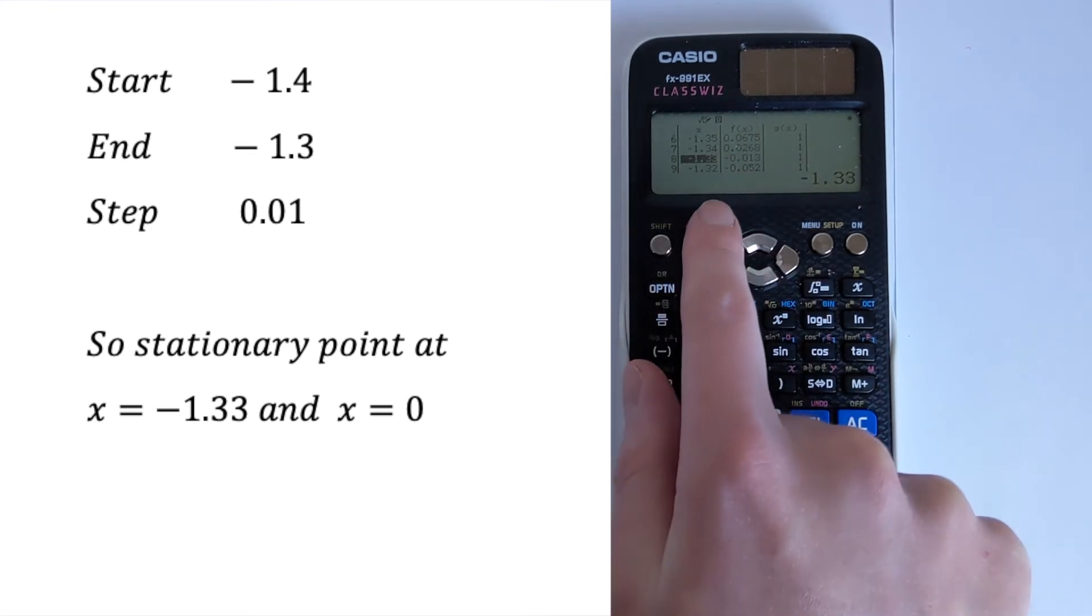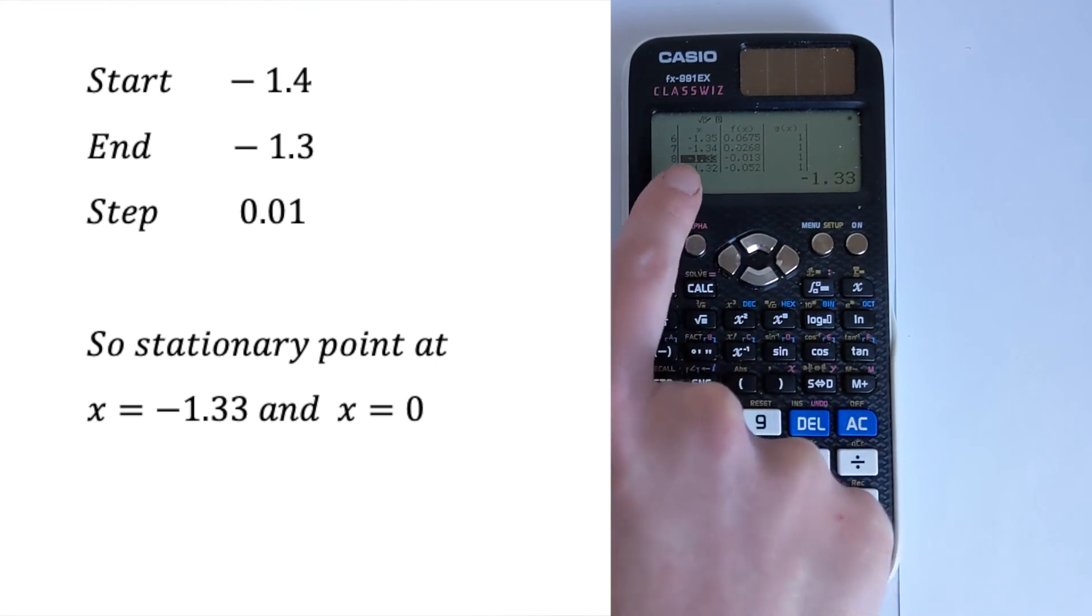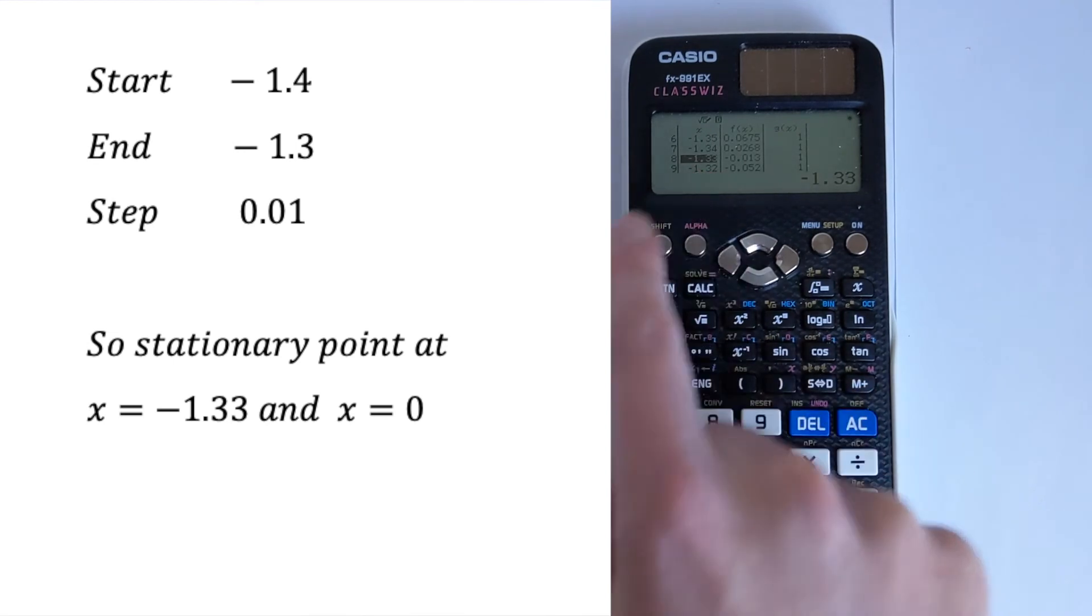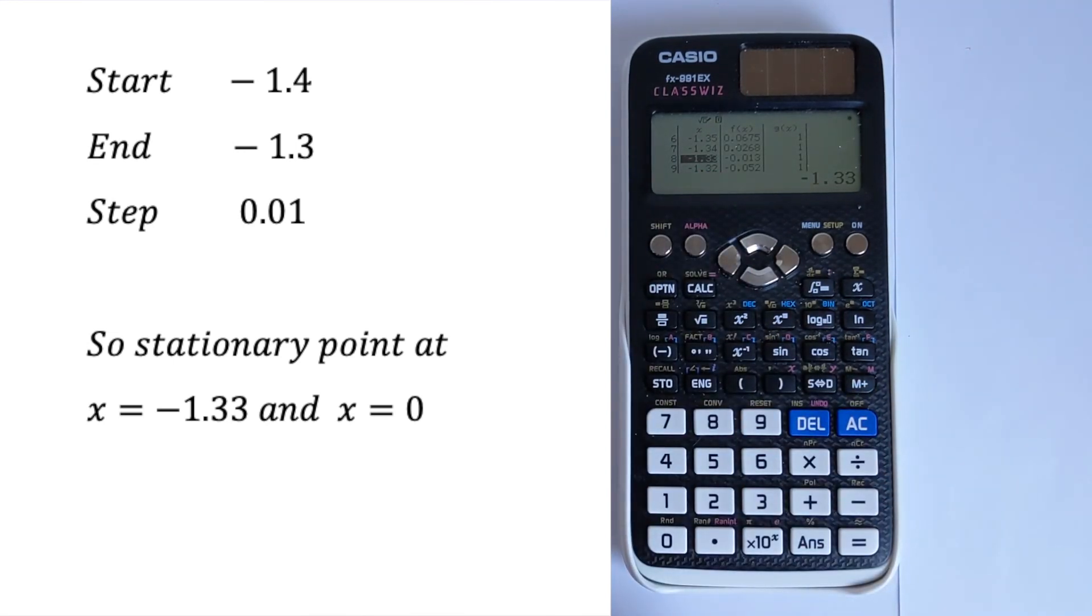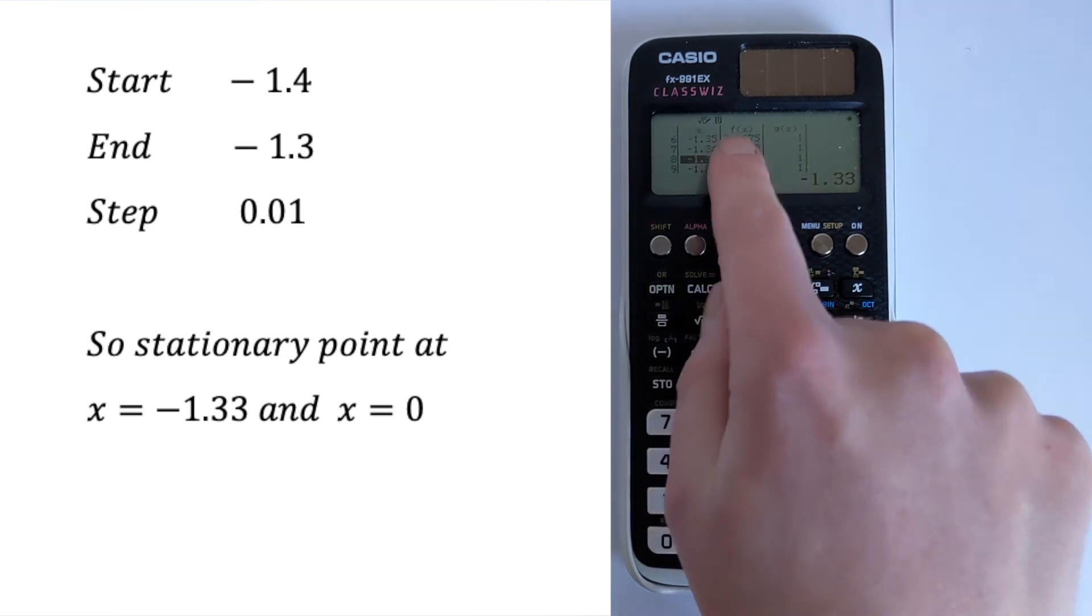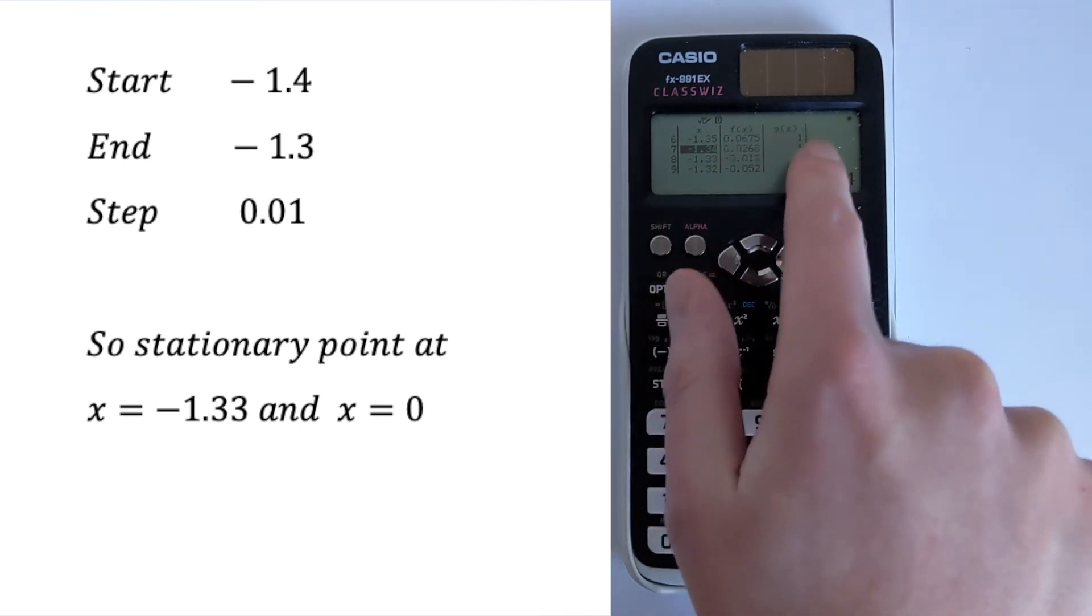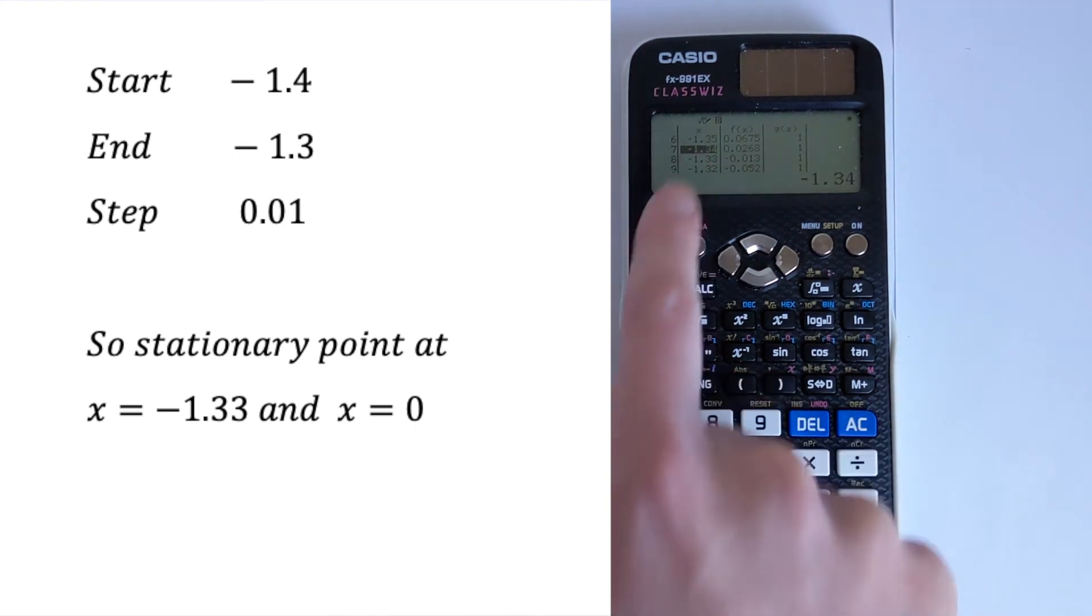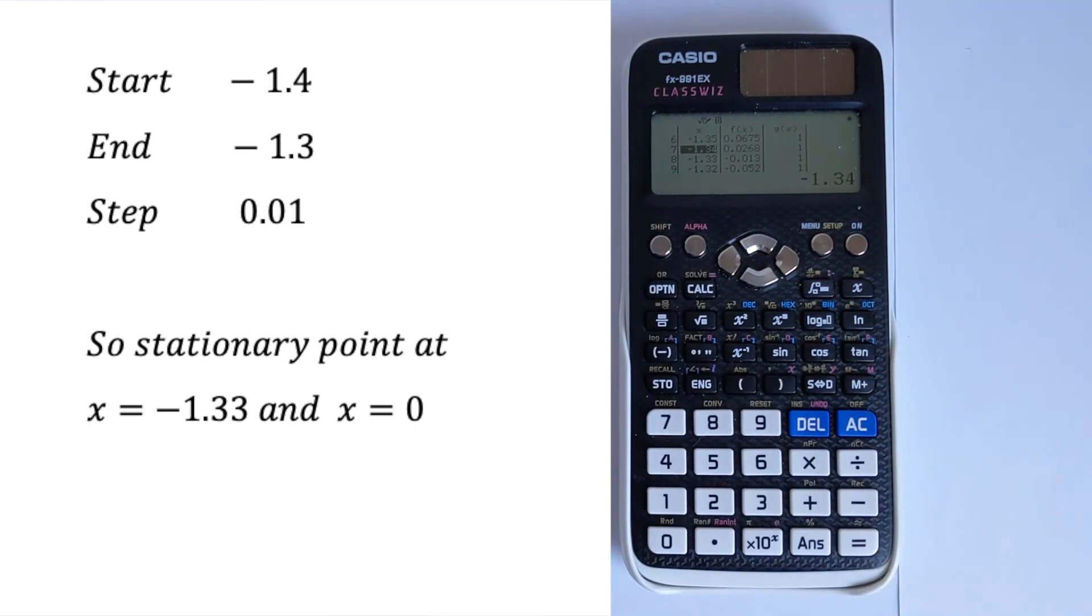So you could zoom in even further and do between these two and 0.001, and that would get you even closer. But to two significant figures, I'm going to say that the stationary point is coming out, if we look at there, we've got 0.026. So somewhere between -1.34 and -1.33.